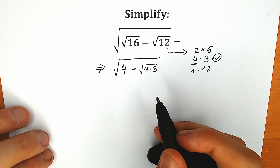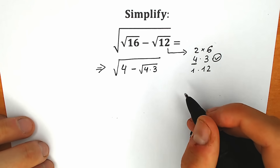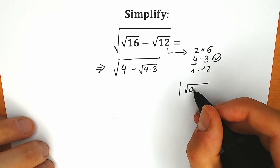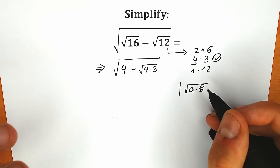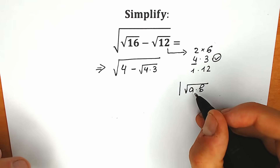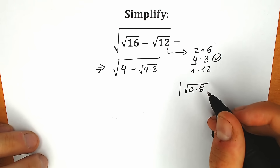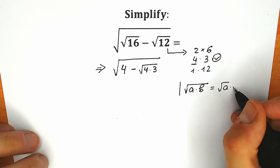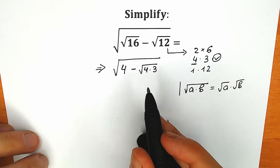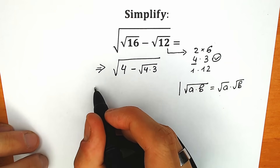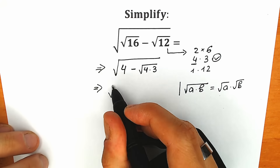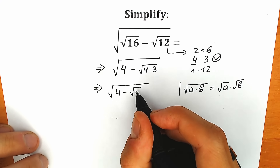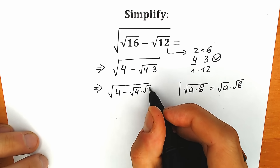According to a basic square root property — I'm going to write this property right here on the bottom — when you have square root of a times b, a product, it doesn't work with addition and subtraction; it works only with division and multiplication. So when you have square root of a times b, we can easily split it as square root of a times square root of b. So square root of 4 minus square root of 4 times square root of 3.